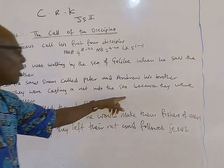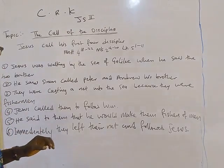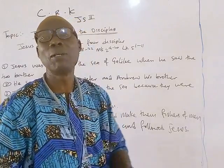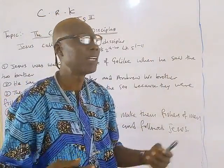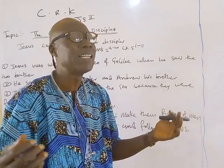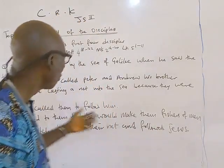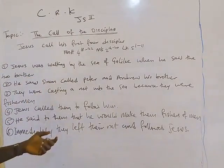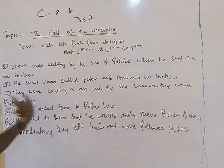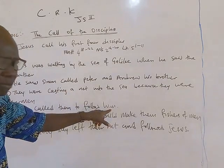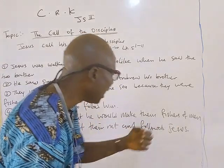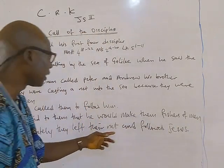They were casting a net into the sea because they were fishermen. When you read along, you see that Jesus Christ did not call the lettered — people that had education, people that were well-read, people that know more. But he called the lesser in sight, people that others don't even look unto. How could fishermen walk with Jesus Christ? It is just a mystery. He called them to follow him, saying he would make them fishers of men. Immediately, they left their nets.